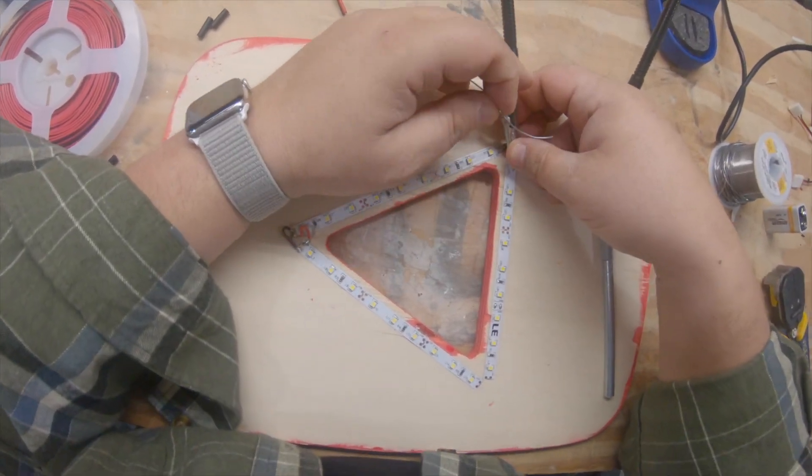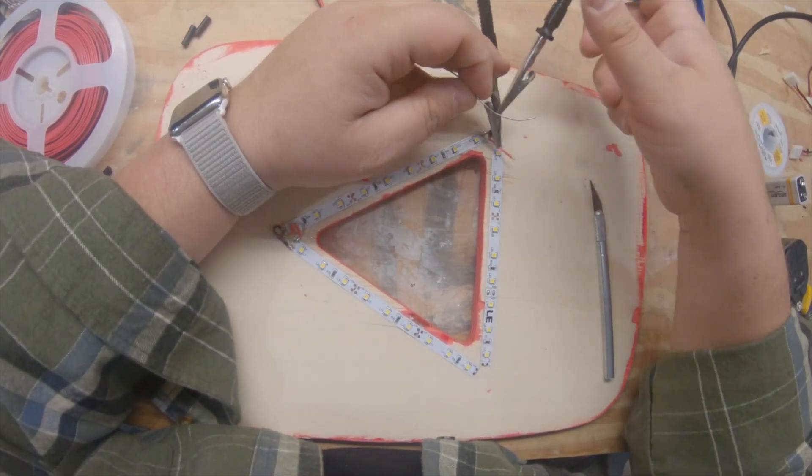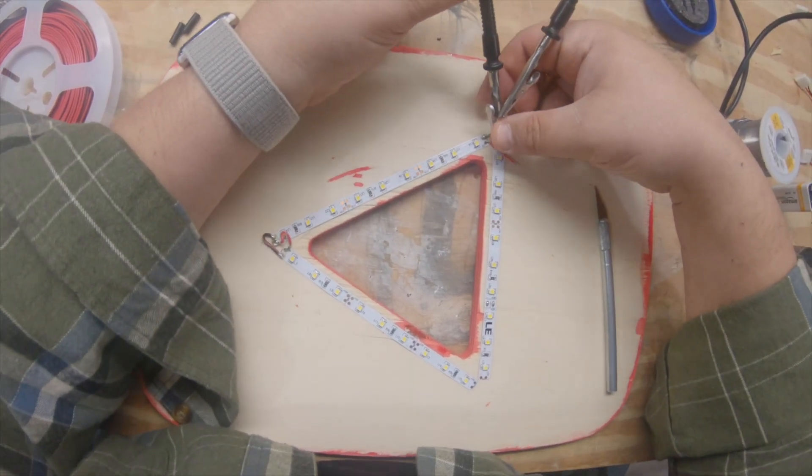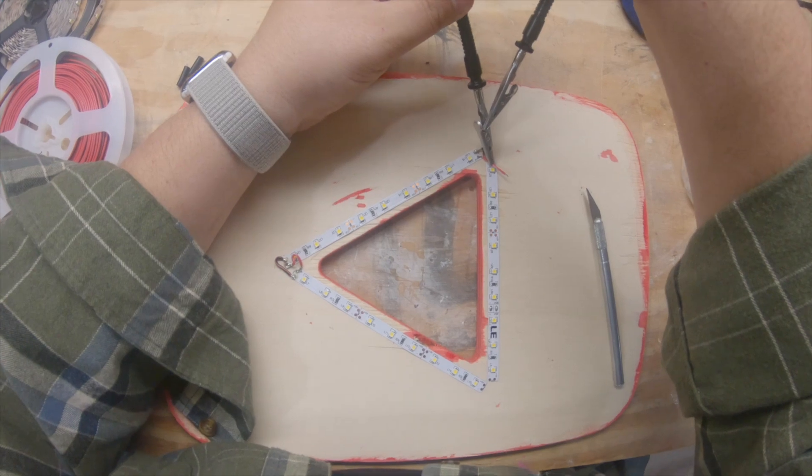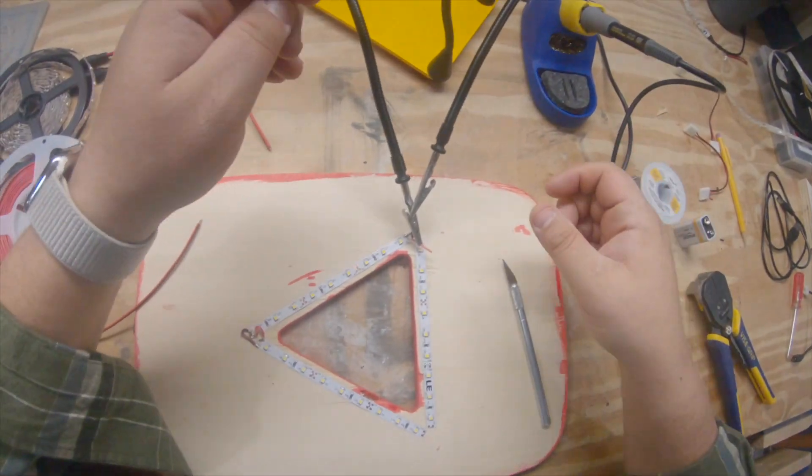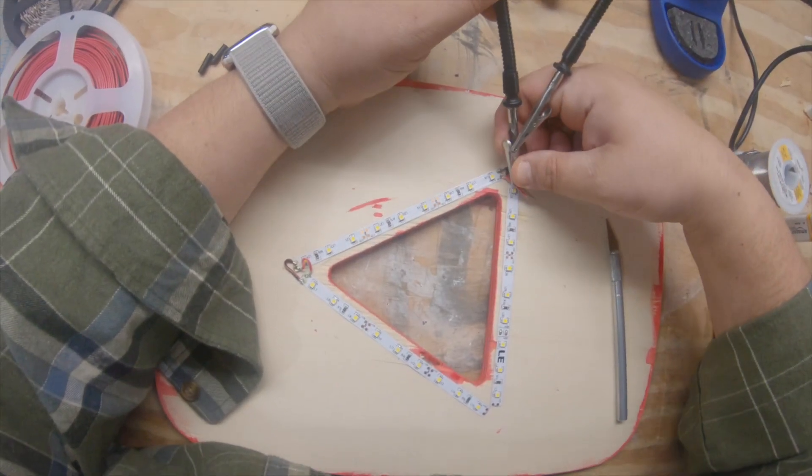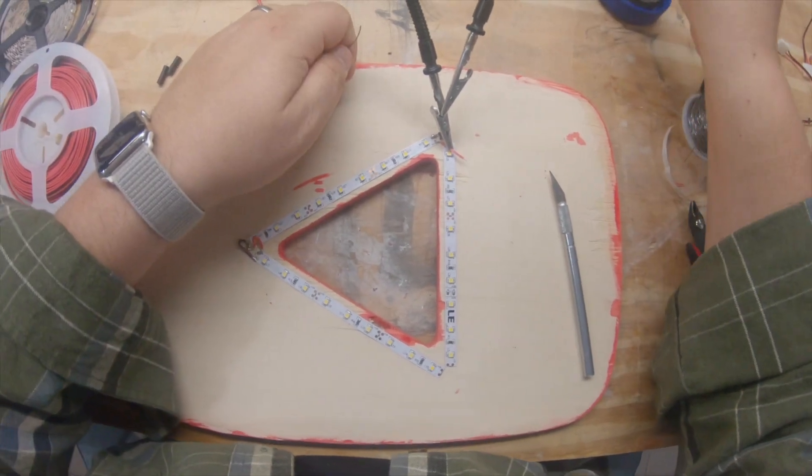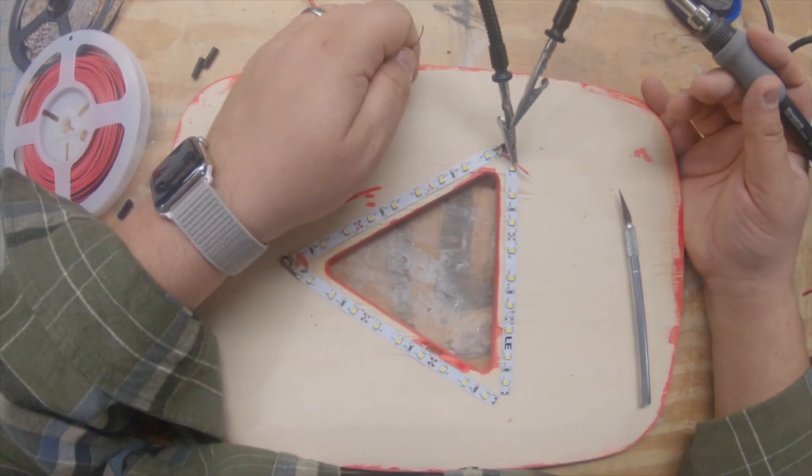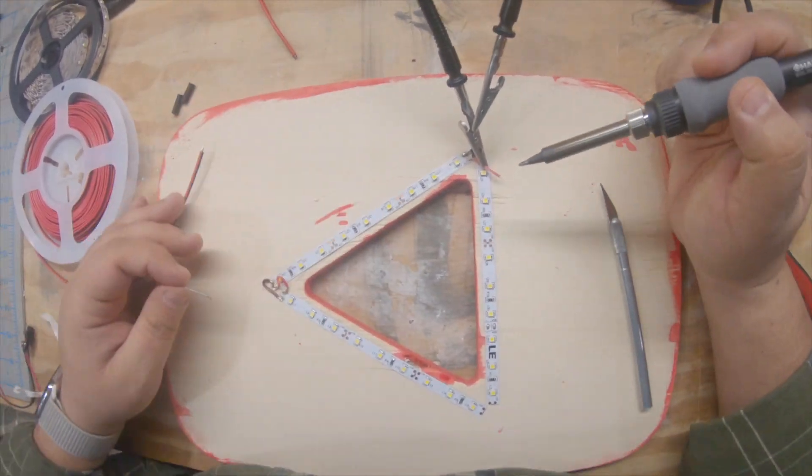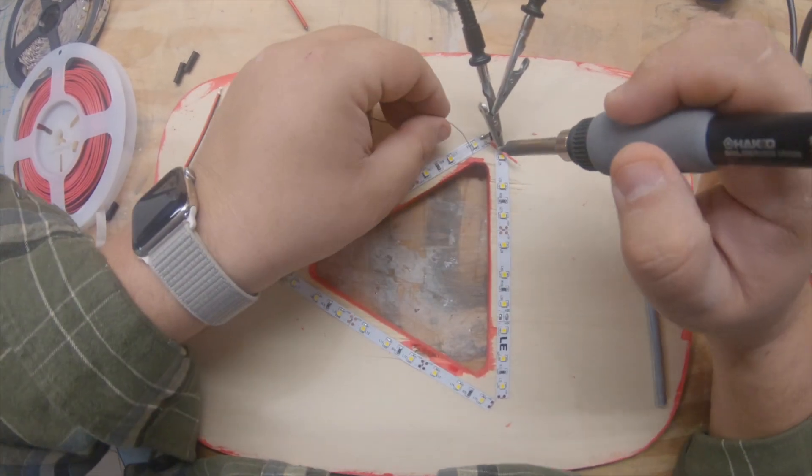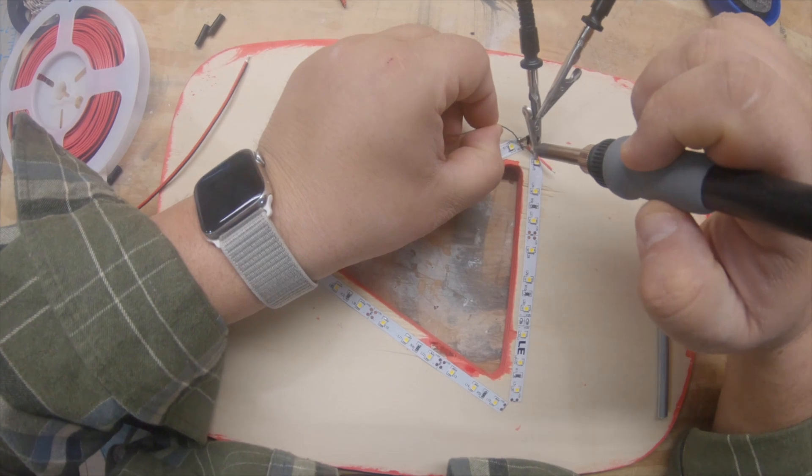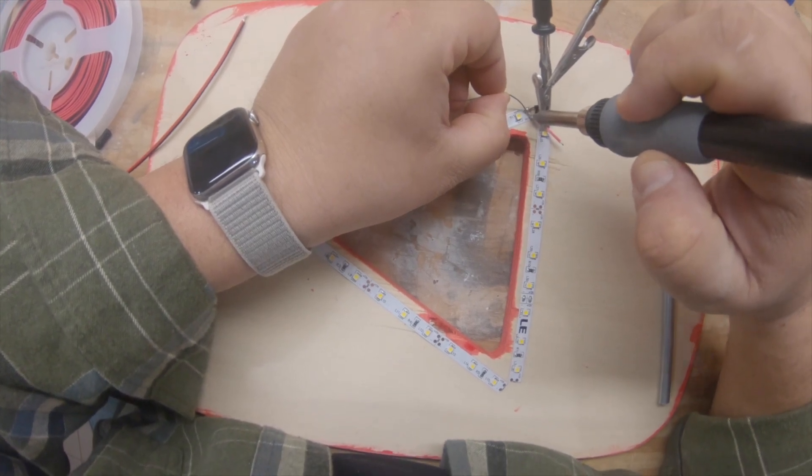And then finally the kind of holy grail of LEDs are the addressable LEDs where every single little LED is addressable by a computer. These are much more expensive, much more complicated and actually require you to hook some sort of computer up to them that you've programmed with like Python or something. We'll get there but for now we're just working with these single color 12 volt guys because they're super easy to solder.